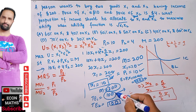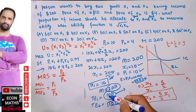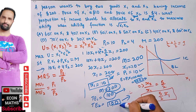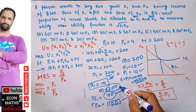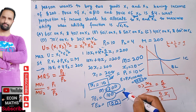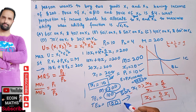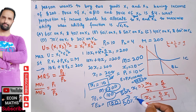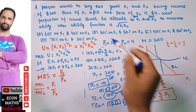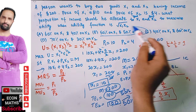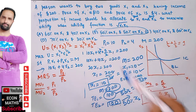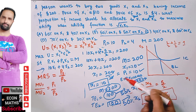Total expenditure on good X1 is $100 and total expenditure on good X2 is also $100, out of a total income of $200. That means he is giving 50% to good X1 and 50% of his income to good X2. So the correct option is 50% on good X1 and 50% on good X2.